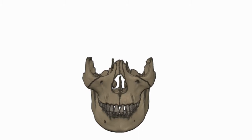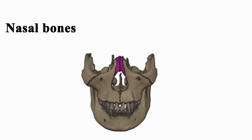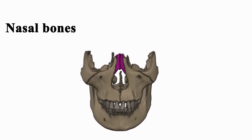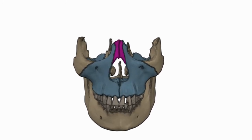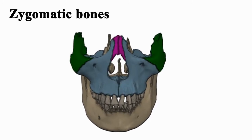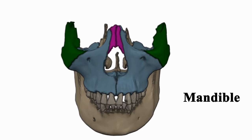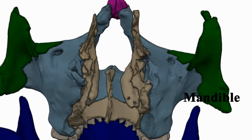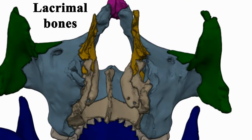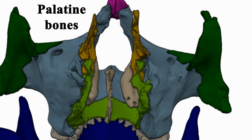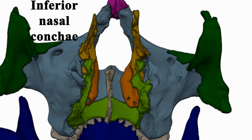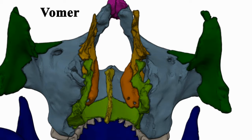Bones of the facial part are: two nasal bones (left and right), two maxillary bones (left and right), two zygomatic bones (left and right), one mandible bone, two lacrimal bones (left and right), two palatine bones (left and right), two inferior nasal conchae bones (left and right), and one vomer bone.